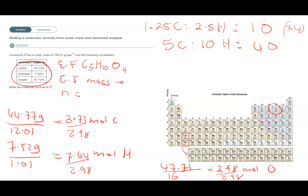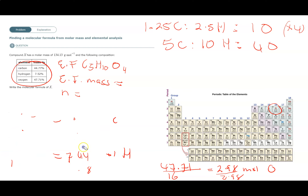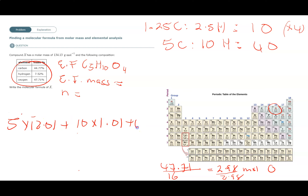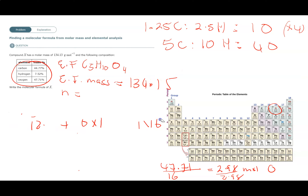Now we add together the masses of all those atoms: 5×12.01 for carbon, 10×1.01 for hydrogen, and 4×16 for oxygen, to find the empirical formula mass. That calculation gives 134.15. We can see that the empirical formula mass and the molar mass given are the same.